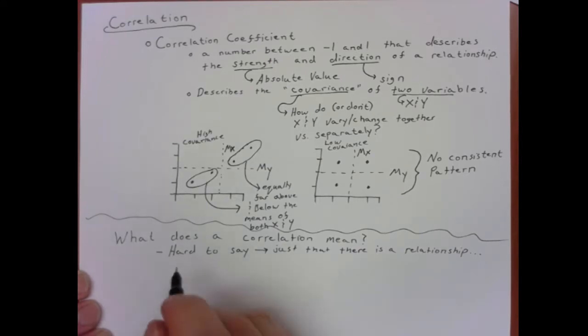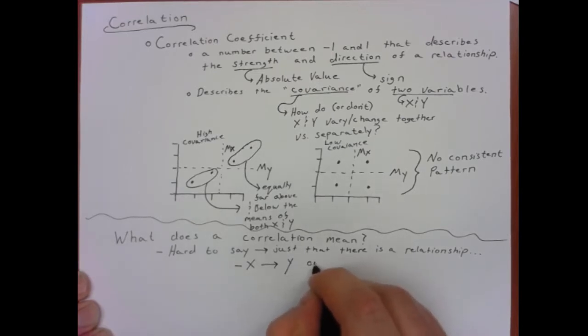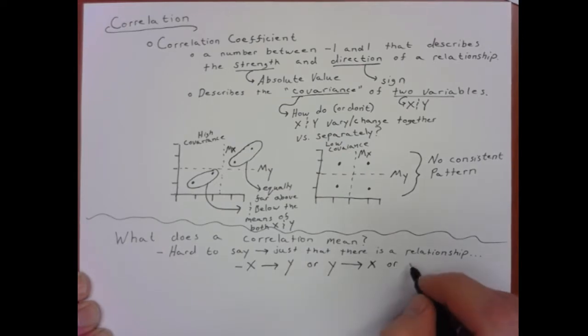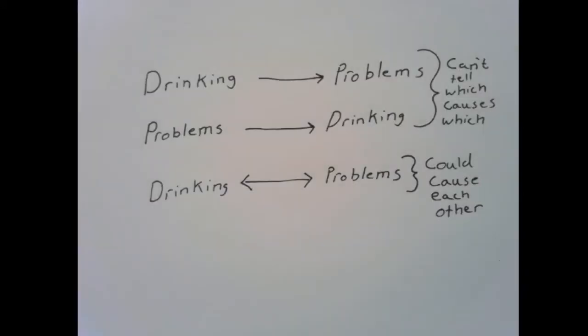It could be the case that x causes y, and this is definitely possible. However, you can't rule out the possibility that y actually causes x. Or it's also possible that x and y both have a causal relationship towards each other. To put this in a more concrete example, let's say x is drinking alcohol and y is having problems in your life. The first situation: drinking alcohol causes problems in your life.